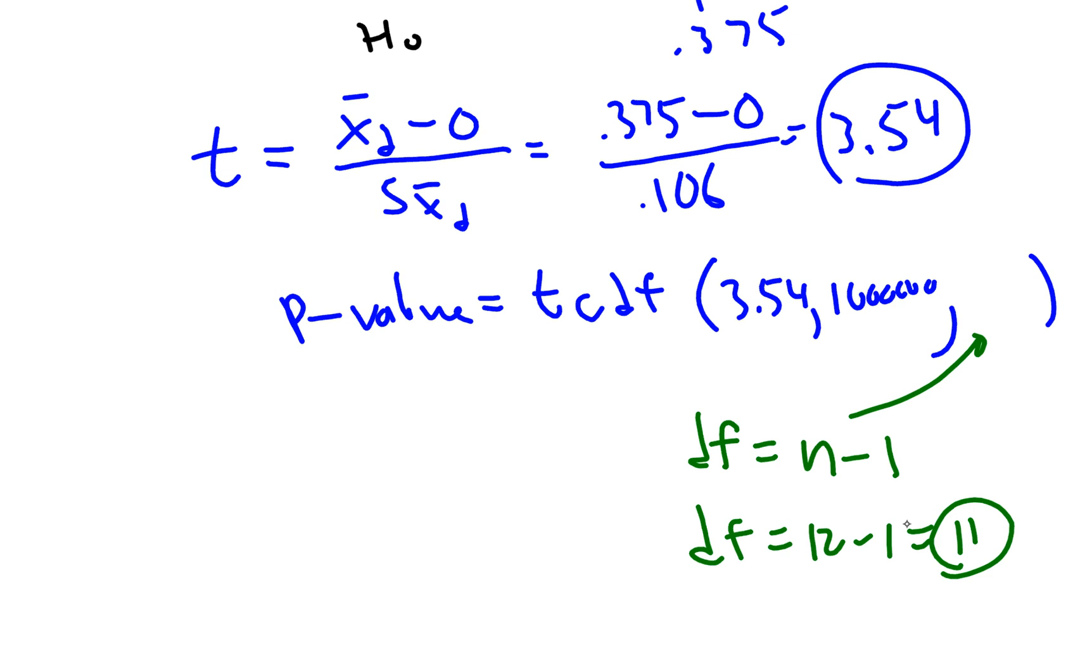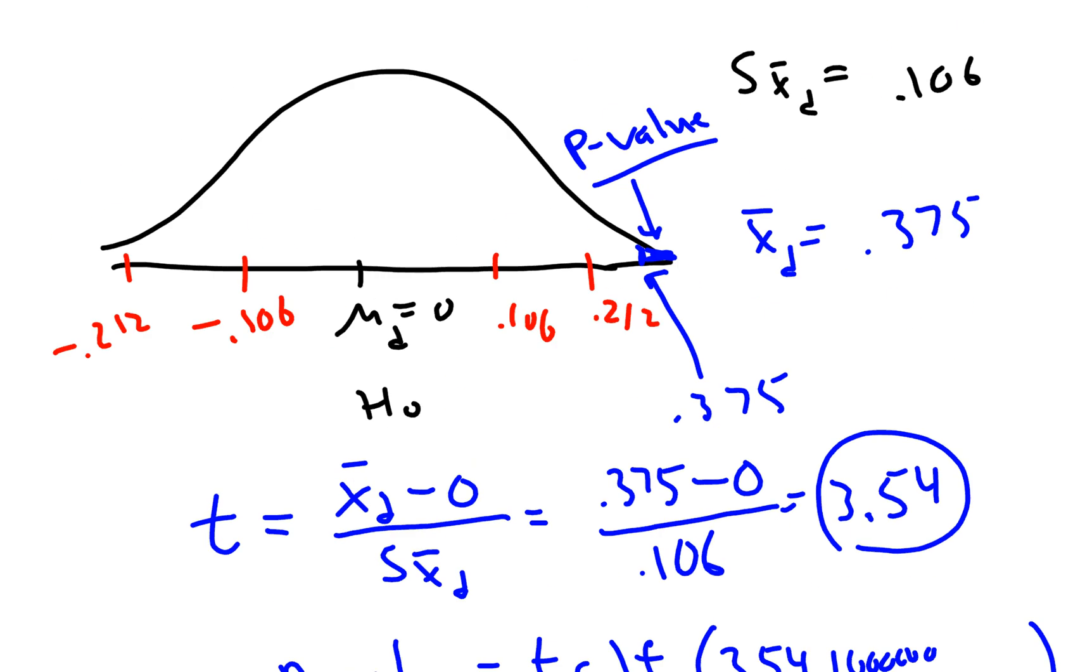And I am getting an area, or a p-value, of 0.002. So that means the area in this tail, this green area in this tail, turned out to be 0.002, which is extremely small.